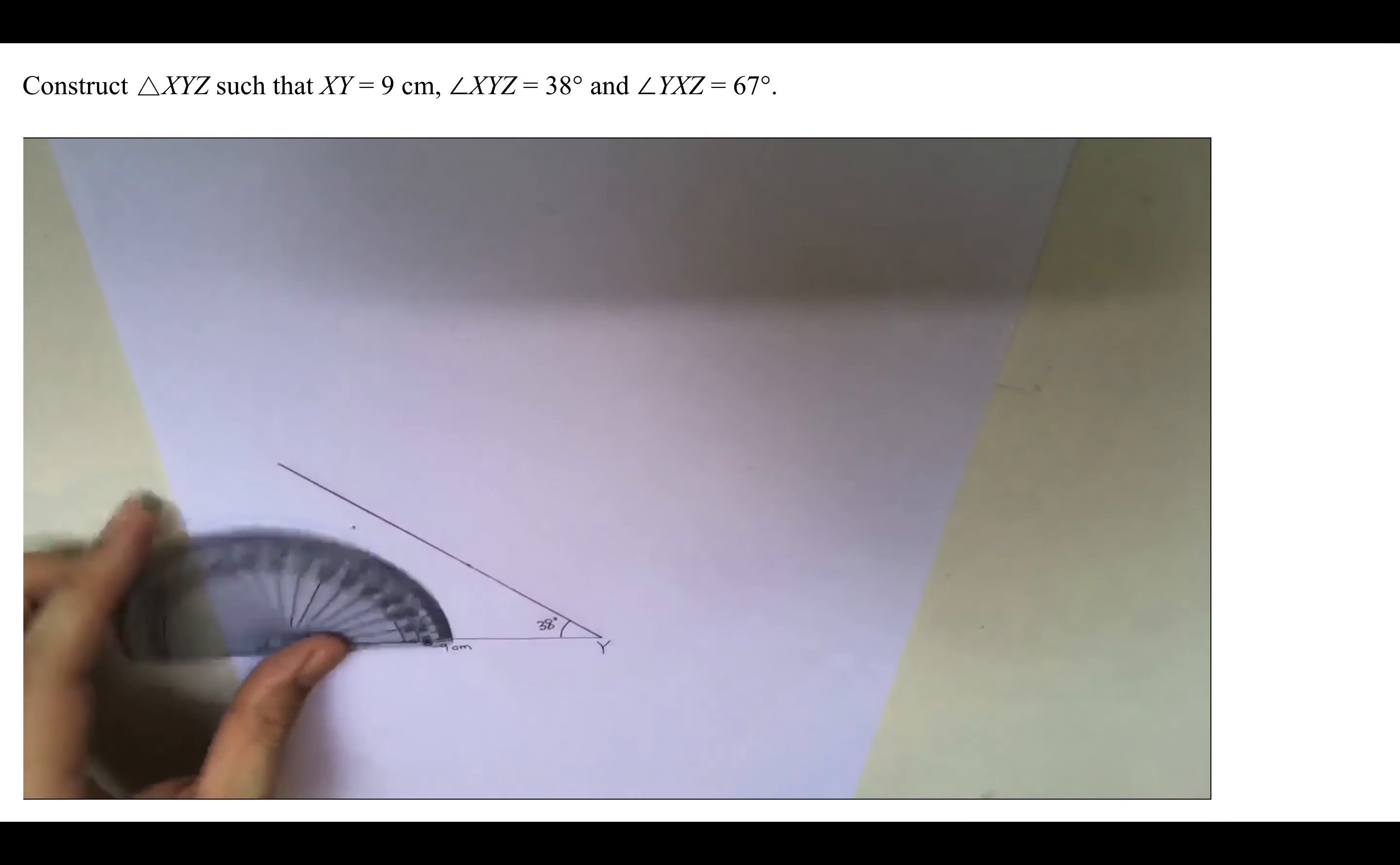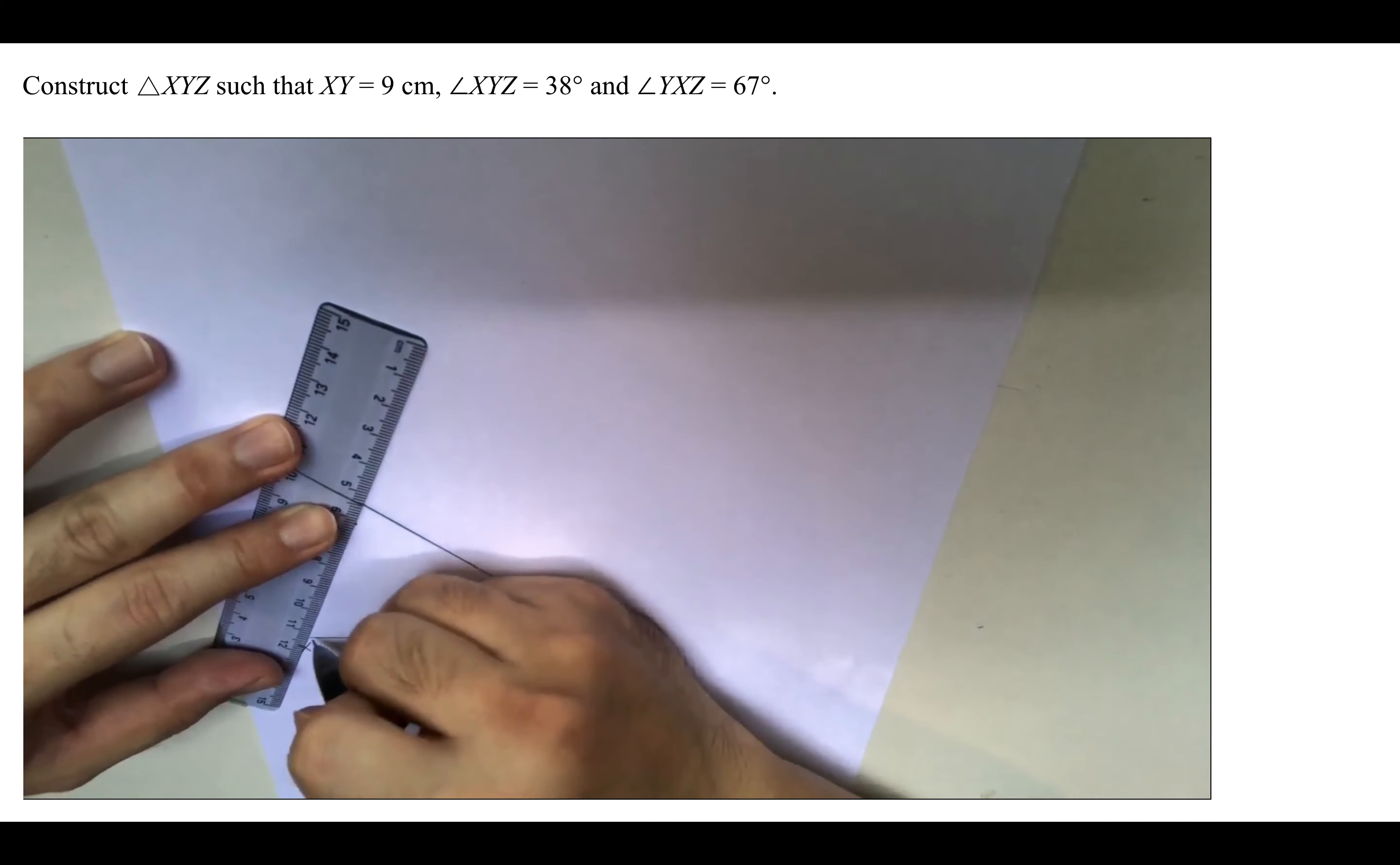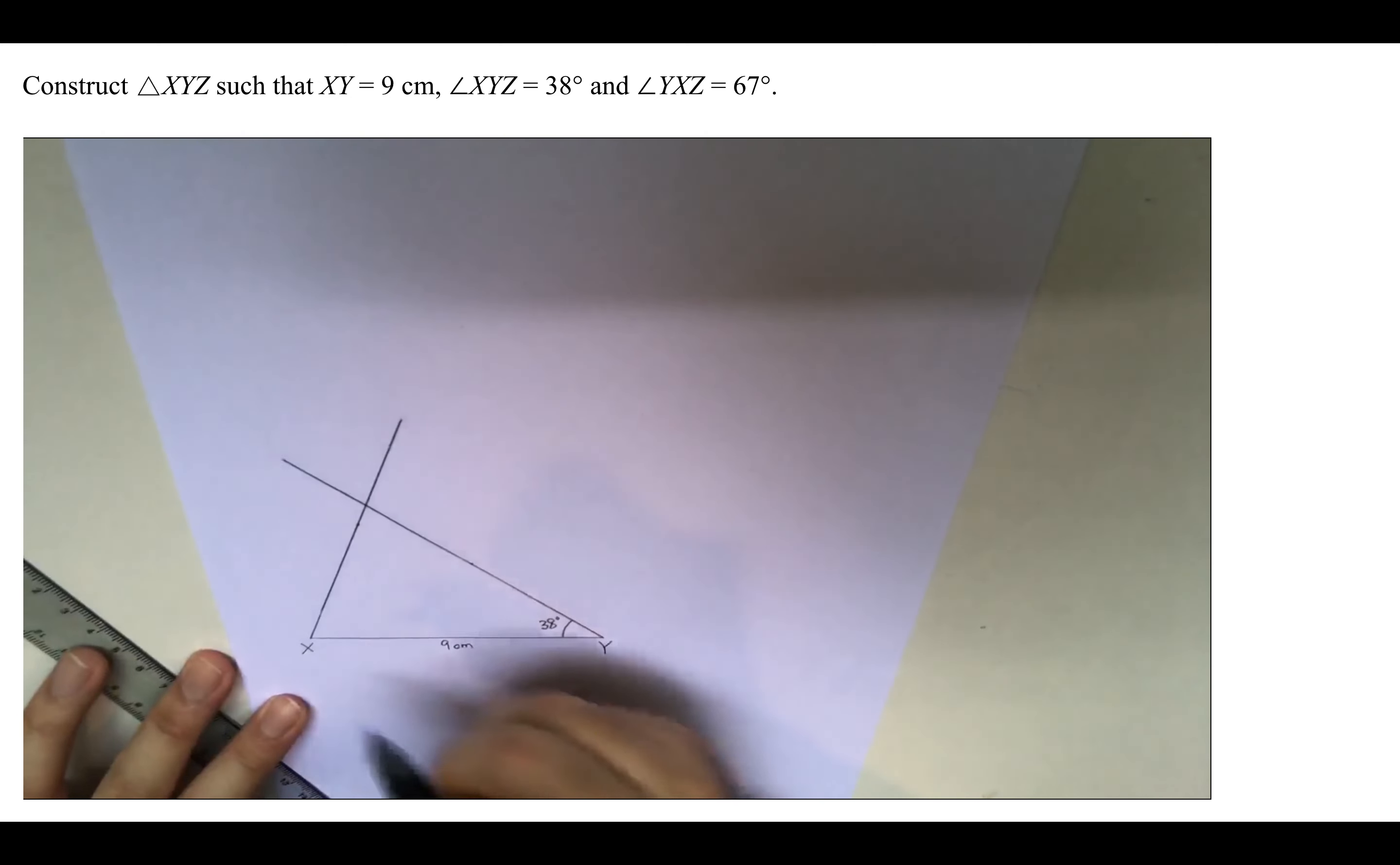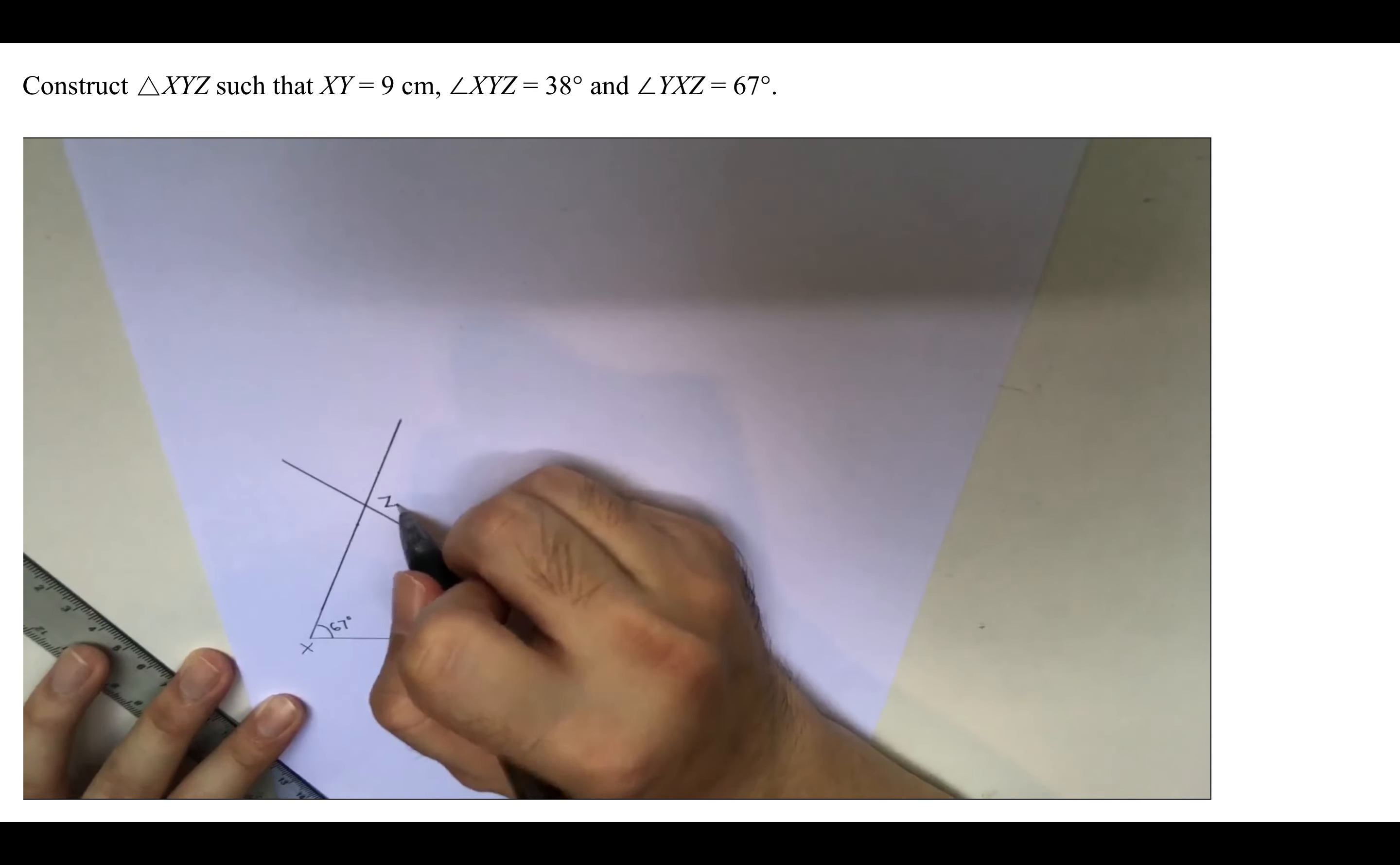Once we have that, same thing, use our ruler and draw the line. After that, label everything that we know. We know that this angle is 67 degrees. Once we have that, finally we know the point over here is Z.